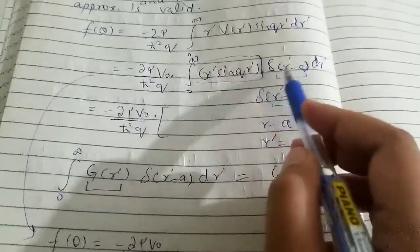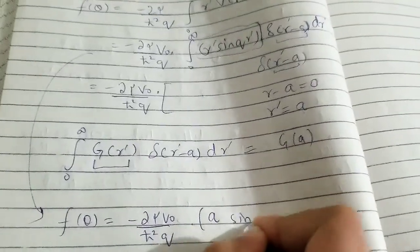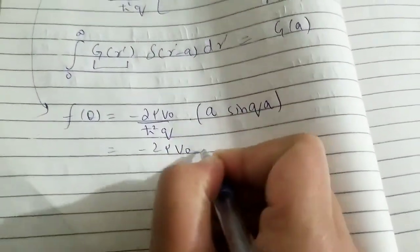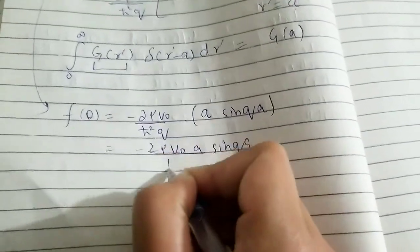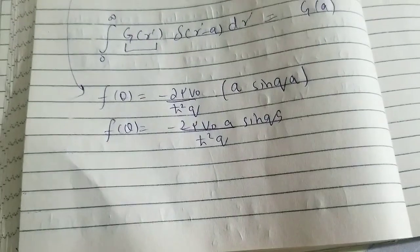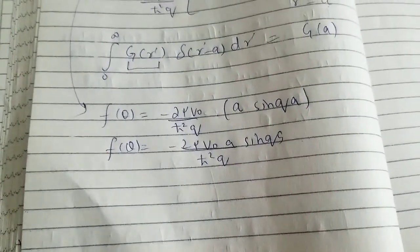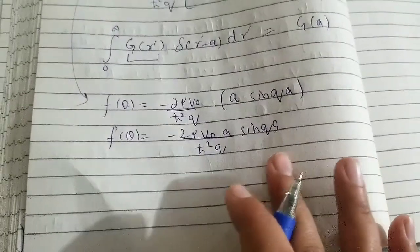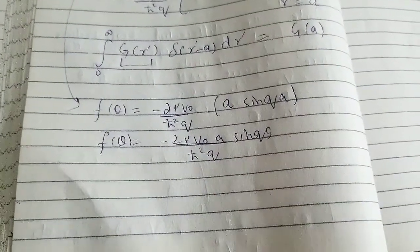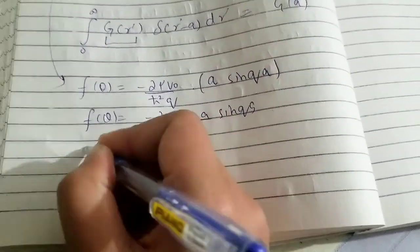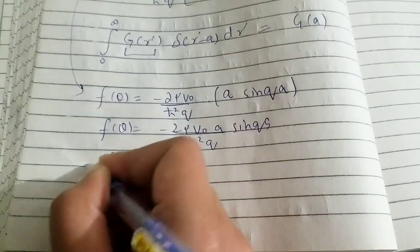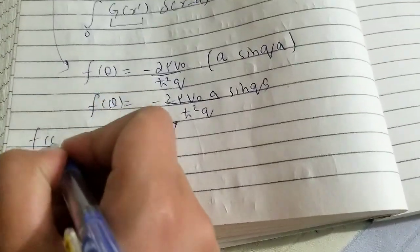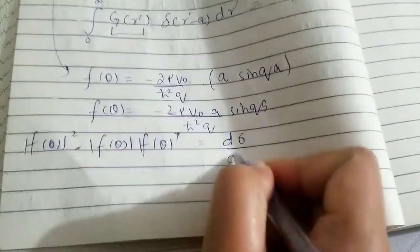Using this, the value at r-prime equals a gives us a times sine(qa). So the scattering amplitude f(theta) equals minus 2mu V naught a sine(qa) divided by h-bar squared q. To find the differential cross section, we must take the square modulus of f(theta). I stress square modulus because sometimes the expression is complex, and you need to multiply f(theta) by its complex conjugate.